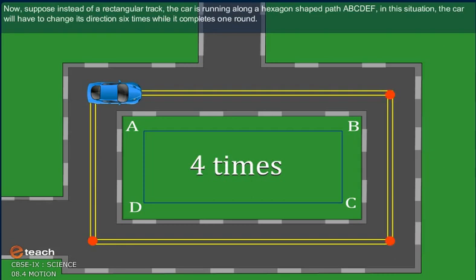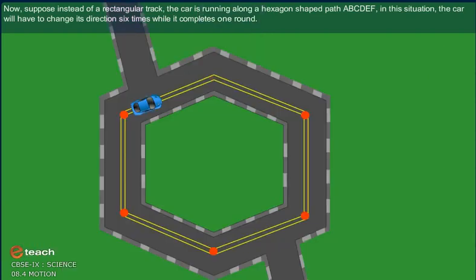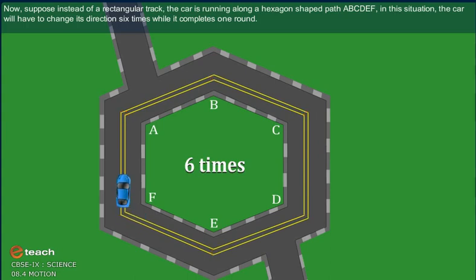Now suppose, instead of a rectangular track, the car is running along a hexagonal shaped path A, B, C, D, E, F. In this situation, the car will have to change its direction six times while it completes one round.